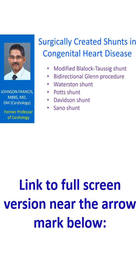The classic Blalock-Taussig shunt is an end-to-side anastomosis of the subclavian artery to the pulmonary artery. In the modified Blalock-Taussig shunt, a Gore-Tex tube graft is used to connect the subclavian artery to the pulmonary artery.